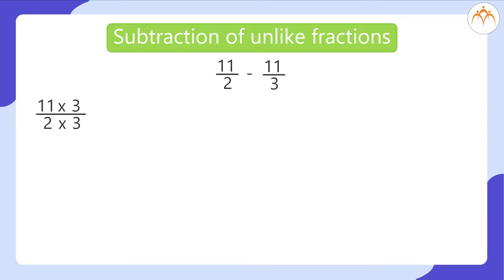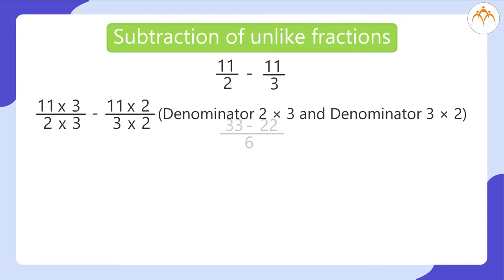So, 11 multiplied by 3 by 6, by 2 multiplied by 3 minus 11 multiplied by 2 by 6 is 33 by 6 minus 22 by 6 which is equal to 11 by 6 meter rope is left which is 1 and 5 sixth meter of rope.